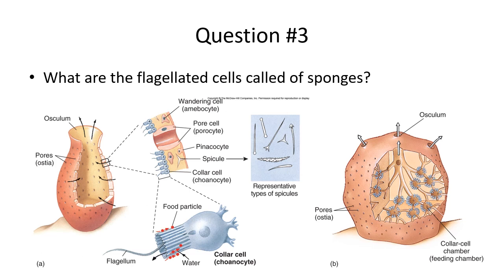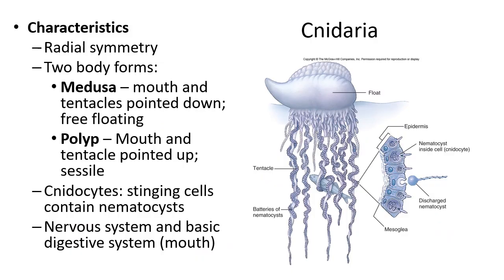Question number three: What are the flagellated cells of sponges called? They are also called collar cells.